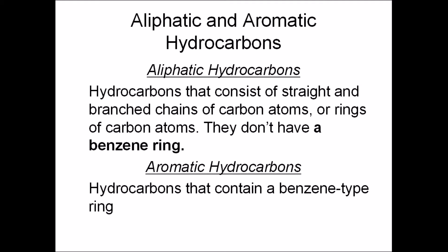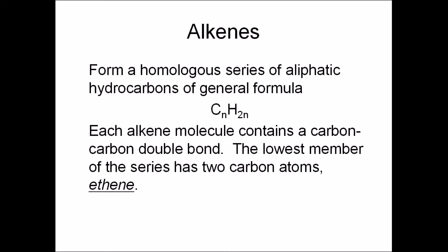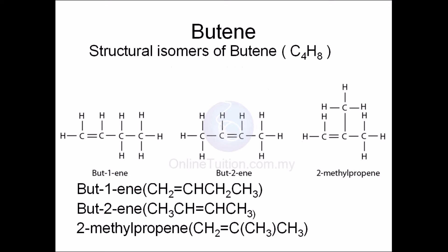Aromatic hydrocarbons, however, do have a benzene ring. Alkenes have the general formula CnH₂n and they always have a double bond. The smallest member is ethene, which has two carbons. Here are the structural isomers of butene. The number in the name tells you where the double bond is: in but-1-ene it's on the first carbon, and in but-2-ene it's on the second.